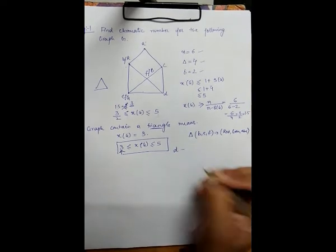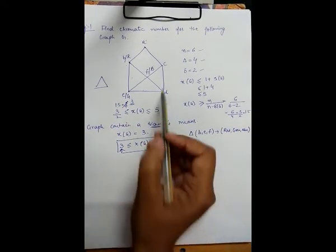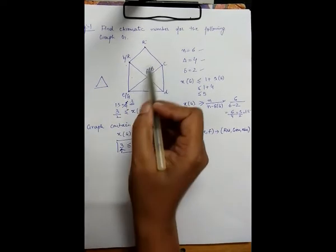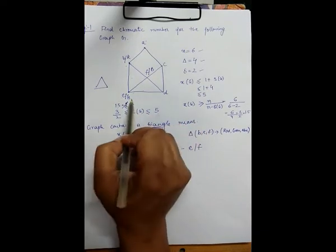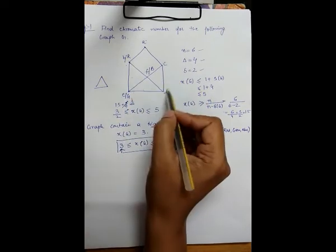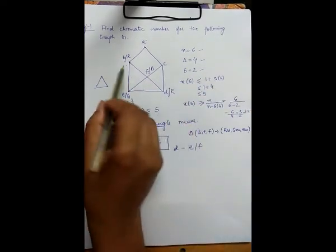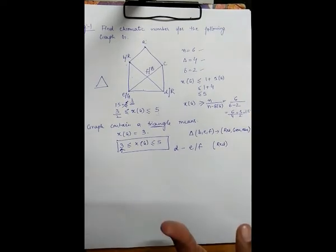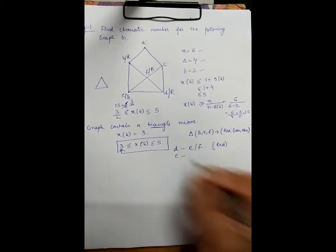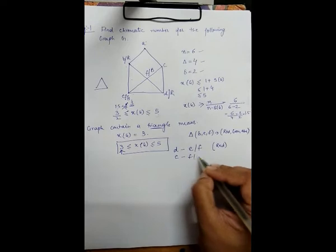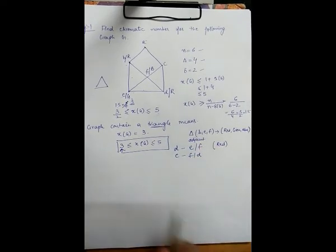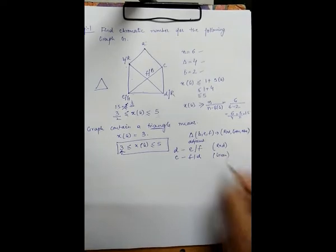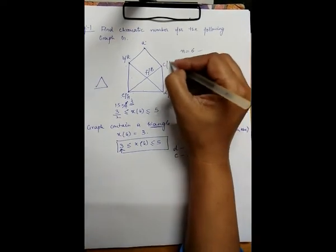Now, vertex D is adjacent to E and F, so D cannot use green (E's color) or blue (F's color). Can I paint D with red? Yes, because D is not adjacent to B. So I paint D with red — the minimum number of colors is still 3. Next, for vertex C: C is adjacent to F and D, so C cannot use blue or red, but I can use green because C is not adjacent to E.